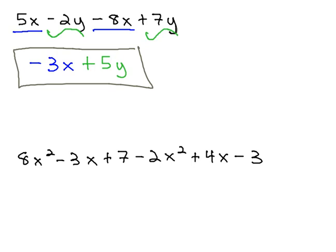Similarly, on this second example, 8x squared minus 3x plus 7, minus 2x squared plus 4x minus 3, when we're looking for like terms, the variables and exponents must match.